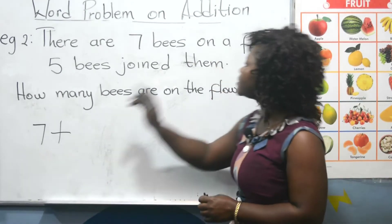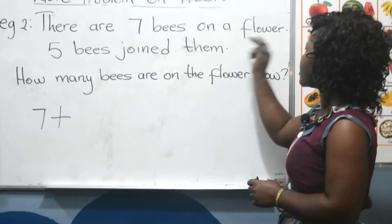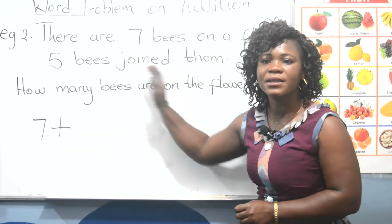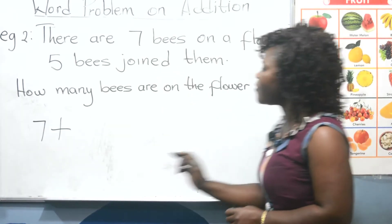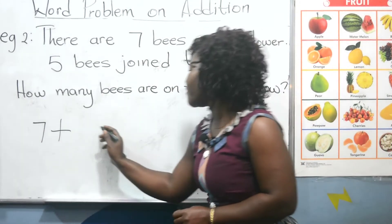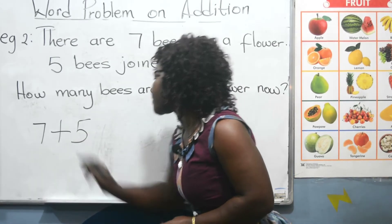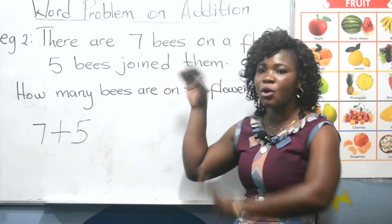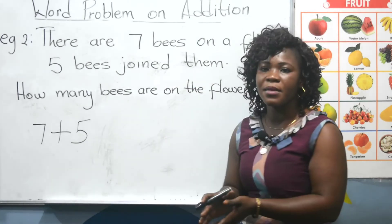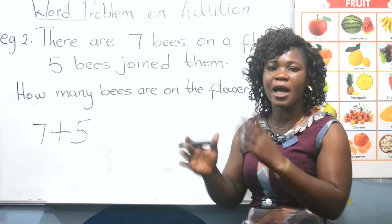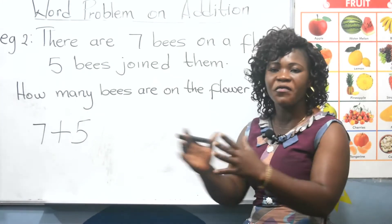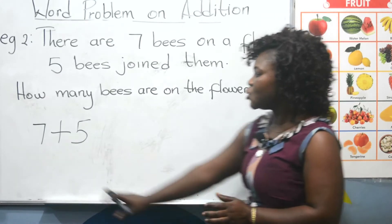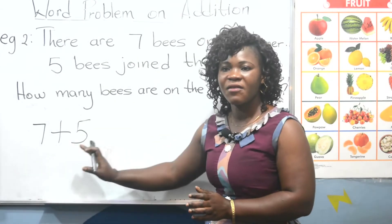Seven plus. So there are seven bees on a flower, five bees join them. So seven plus which number? Five. We have seven bees already, now five join them — that makes it addition, we are adding. We are coming to calculate these two numbers to find the sum of it. So we have seven plus five.